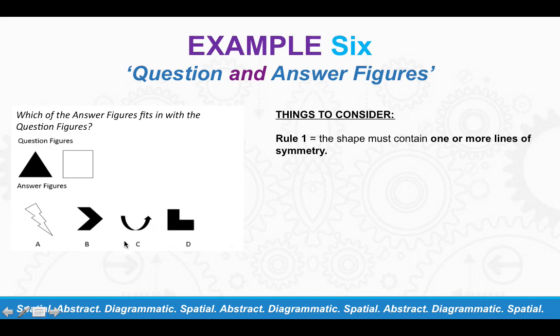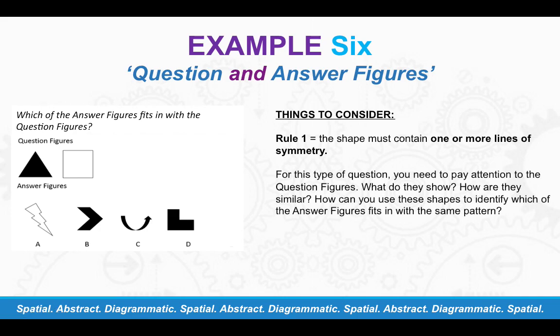You can't do it for answer option C. And again, you can't do it with answer option D. So it is in fact answer B, which is correct. So like I said before, these types of questions, you'll have to work out how these question figures are interlinked. So what do they show? How are they similar? How can you use these shapes to identify which of the answer figures fits in with the same pattern? So anything can be changing.